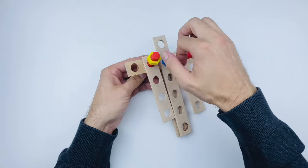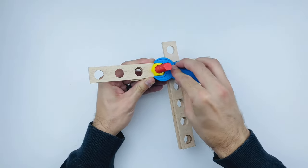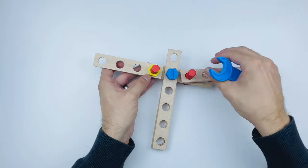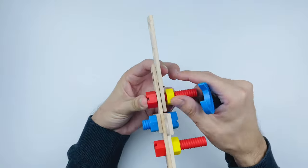Now remember, righty tighty, lefty loosey. If you want to tighten a bolt, you want to turn to the right, clockwise. If you want to loosen a bolt, you want to turn to the left, anti-clockwise.